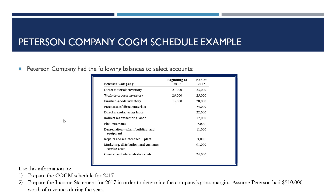Let's start this process for Peterson Company. The first thing we need to do is make our cost of goods manufactured, or COGEM, schedule. To do so, we are going to need a few things: a list of the balances of our different inventory accounts — direct materials, WIP, and finished goods — both at the beginning and end of the period. We also need to know purchases of direct materials, labor expense for the period, and all other costs incurred. We have that information here in front of us.